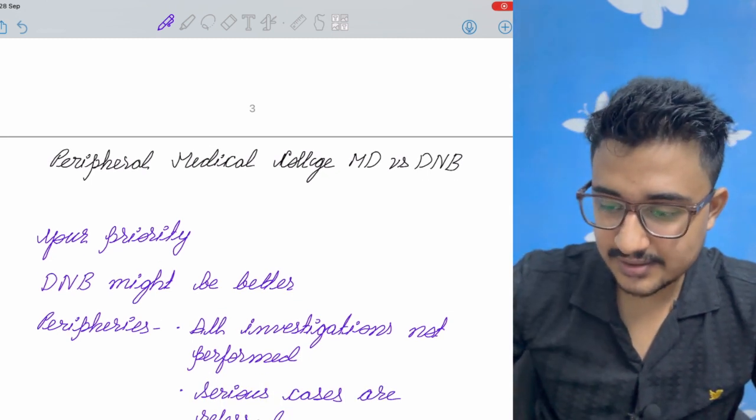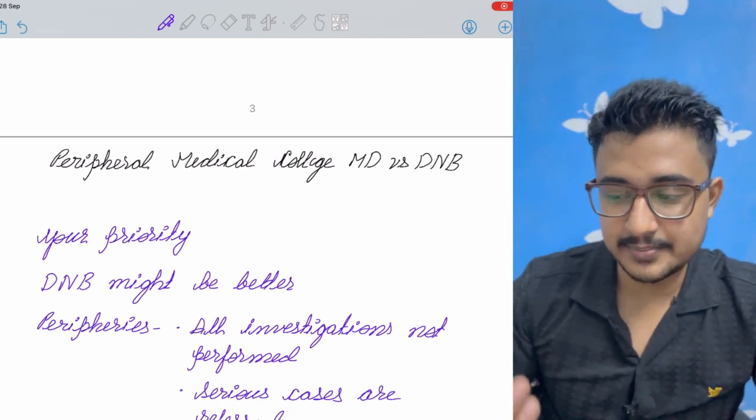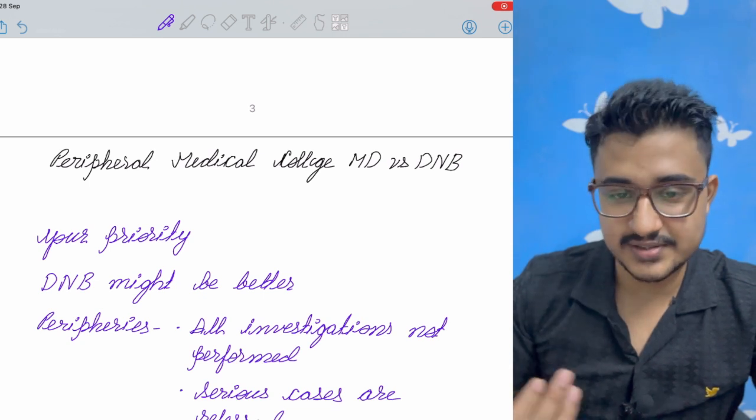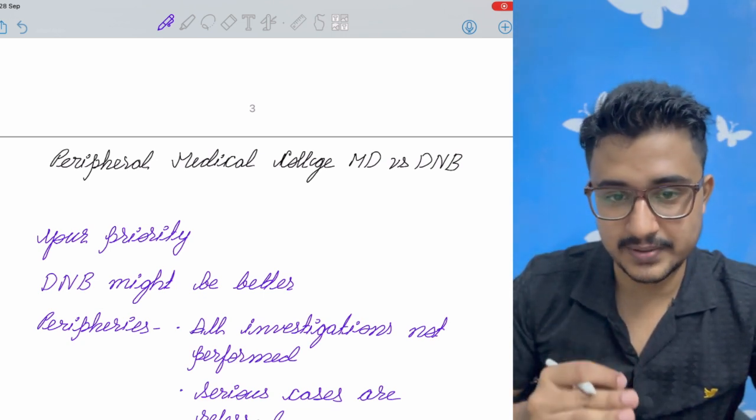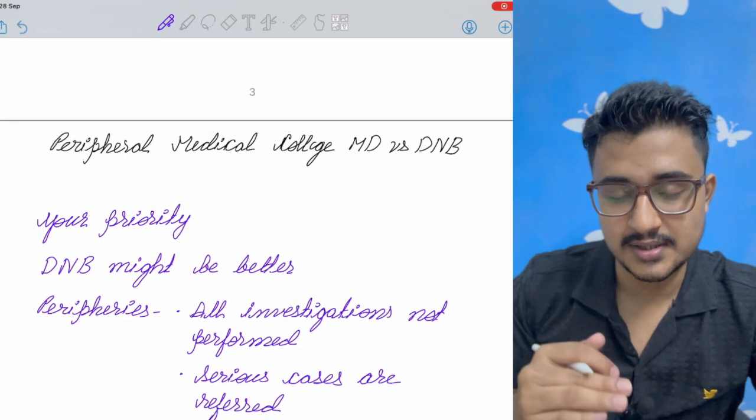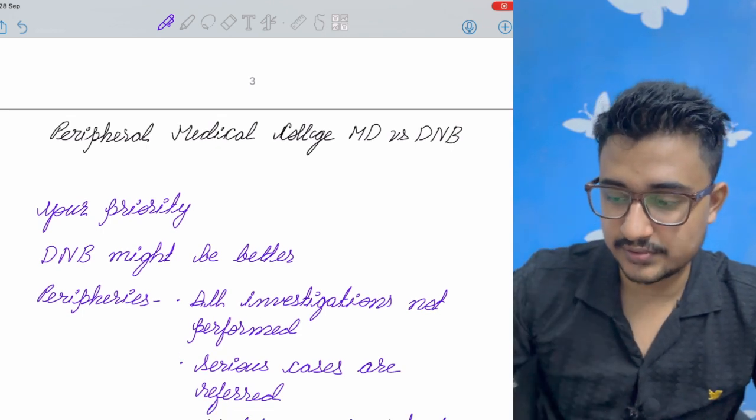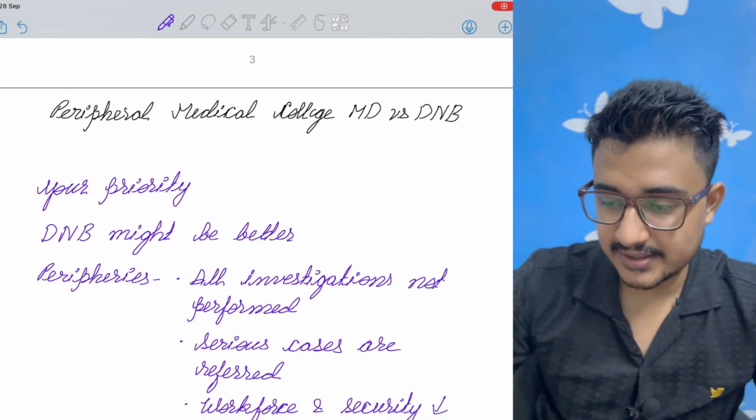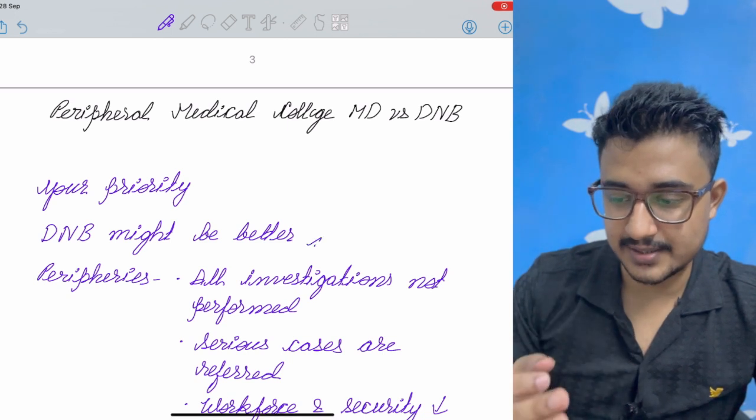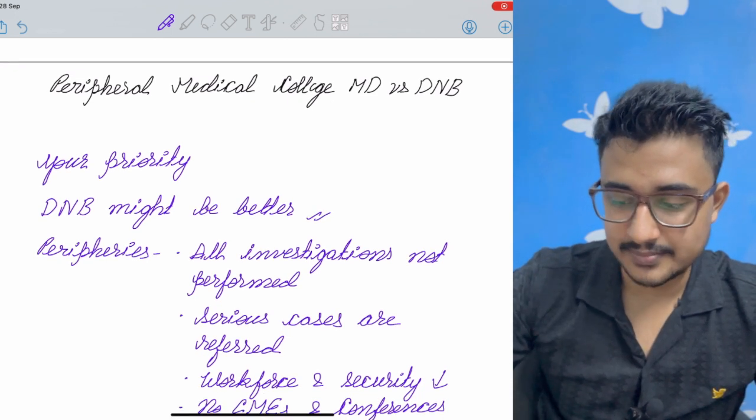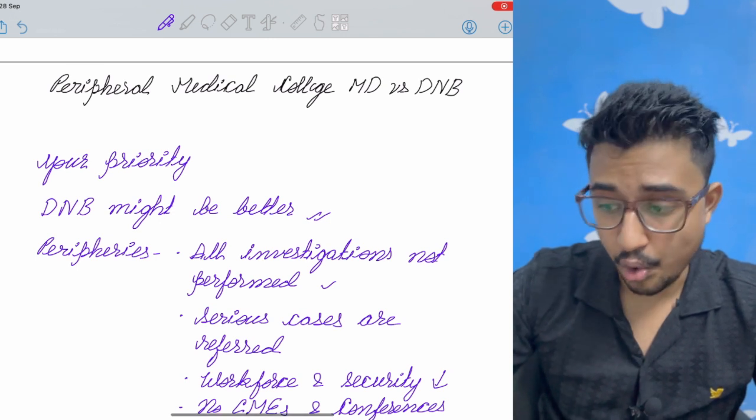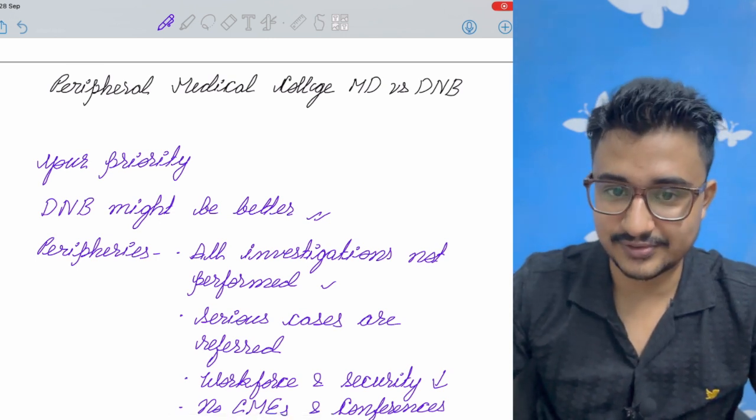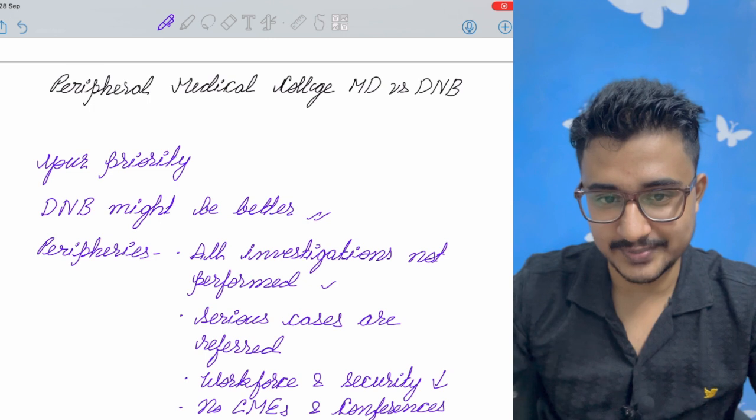Now another question is that peripheral medical college MD versus DNB. In case of MS though, I told you that you should prefer peripheral medical college MS. The hands-on are much more than that of DNB. But in case of MD versus DNB, then your priority might be a DNB because in peripheral medical colleges, all the investigations are not performed. There are many investigations that are not performed there.